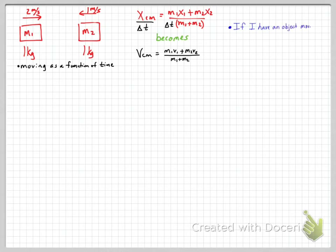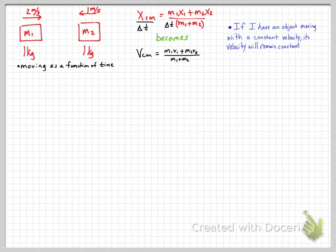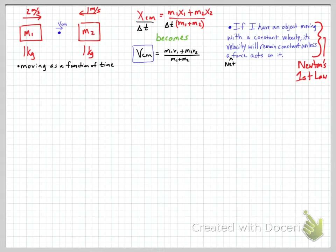Newton's first law states that an object with constant velocity will continue moving at that velocity unless an unbalanced net force acts on it. If there are no outside forces acting on the system, the velocity of center of mass will remain constant. So for our two carts traveling toward each other, if there are no outside forces, the velocity of center of mass will remain the same no matter what happens to those objects.